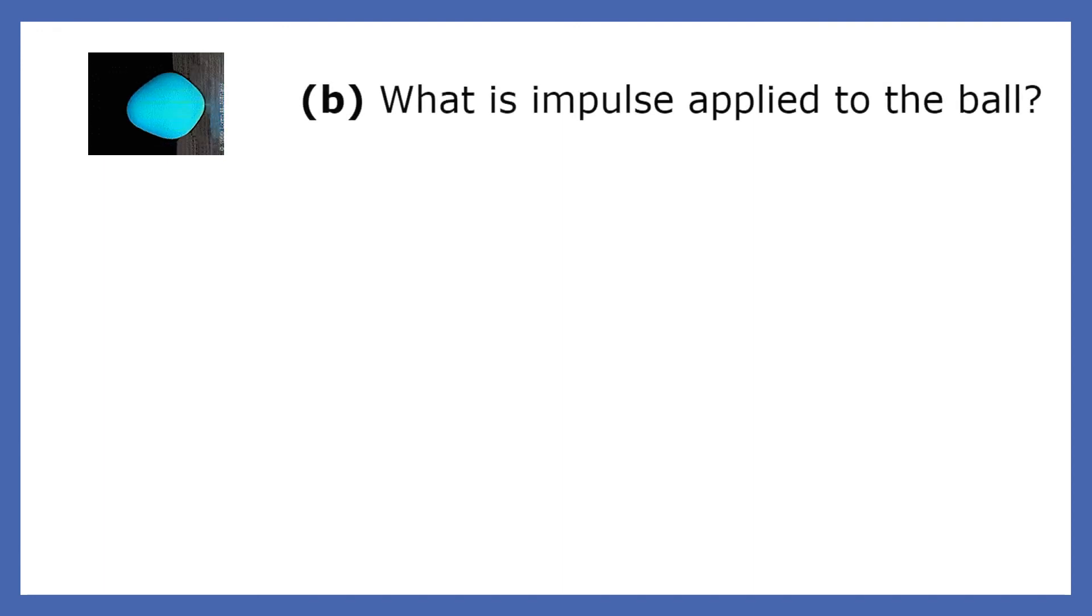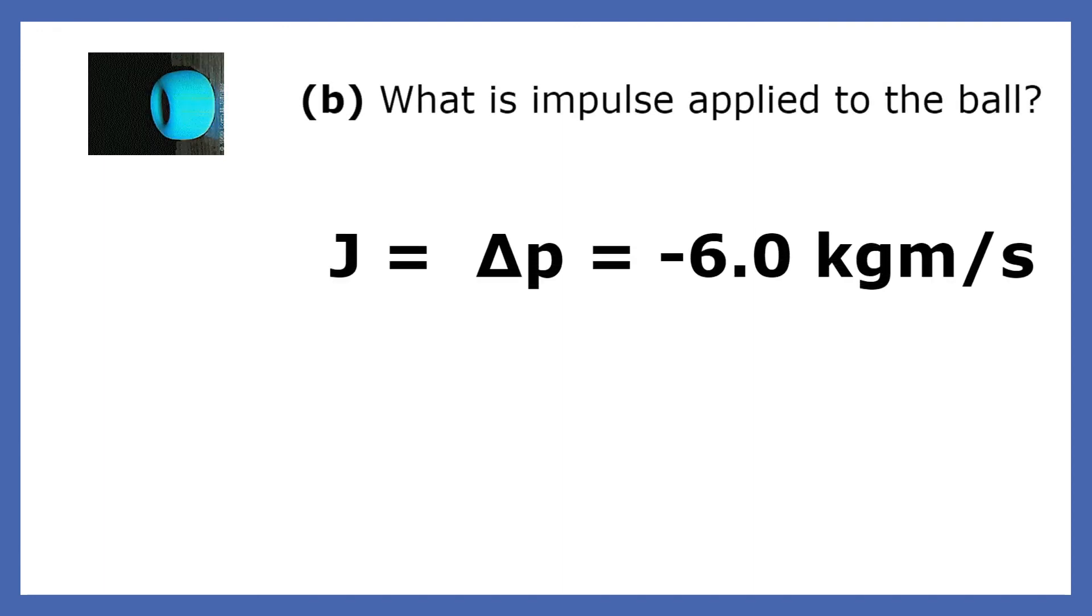So the next question is, what is the impulse applied to the ball? Well, J equals delta p, so the impulse is negative six kilogram meters per second.